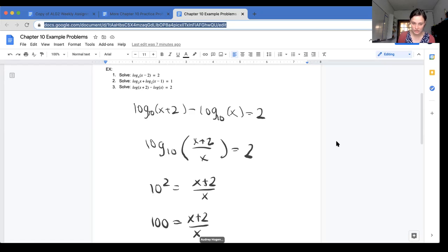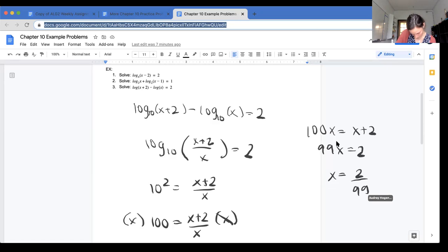And now, in order to solve for x, I need to get it out of the denominator. So I'm going to multiply x to both sides. So I get 100x is equal to x plus 2. I'm going to subtract x and get 99x equals 2. So then x is equal to 2/99. Kind of a strange answer there, but the more you know.